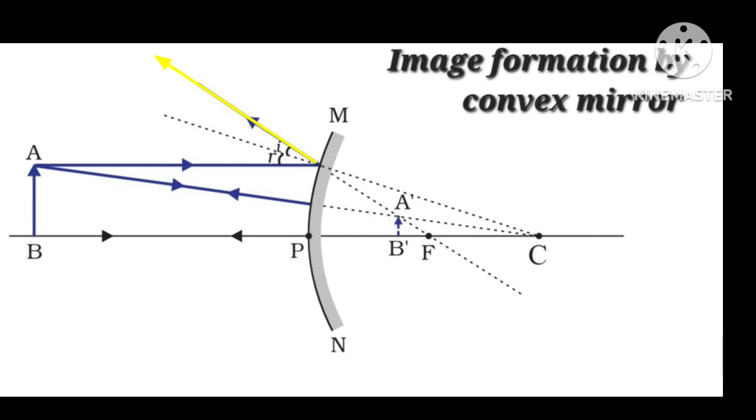The second ray we are considering appears to pass through the center of curvature. A ray that appears to pass through the center of curvature will, after reflection, come back in the same path.